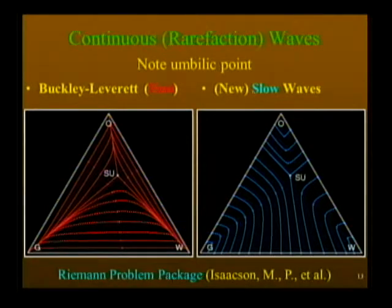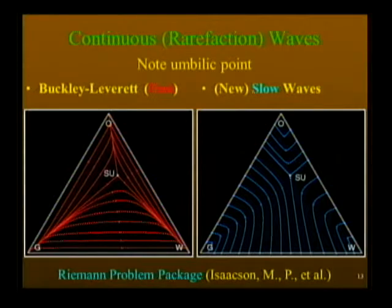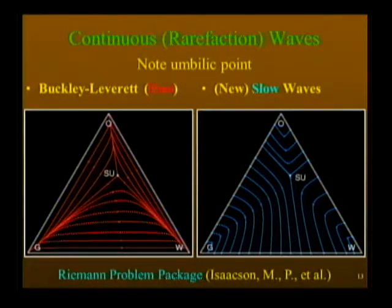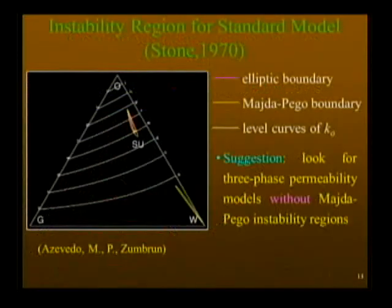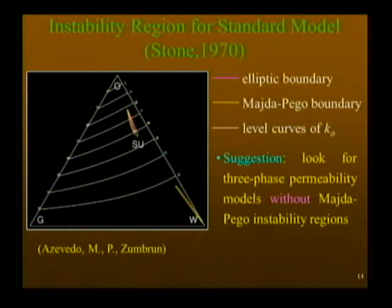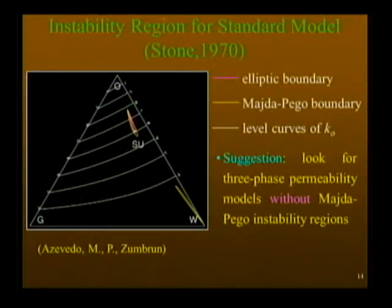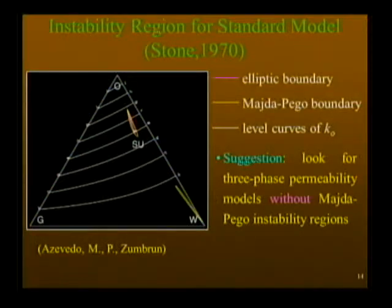At the umbilic point the rarefaction waves form a threefold singularity, whereas everywhere else they form a nice parallel set of waves. The other family is transverse everywhere except at the umbilic point, forming a nice coordinate system for constructing solutions. These pictures come from a Riemann problem package that Eli Isaacson, Dan, and I have worked on along with a myriad of Dan's students. The umbilic point doesn't have to be a point — it could be a whole region, and outside this yellow region there is a small purple region inside which the eigenvalues are complex.